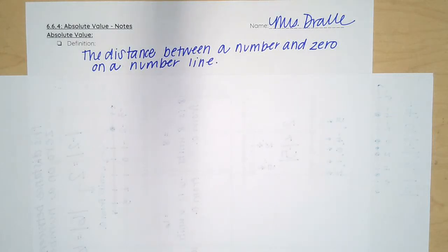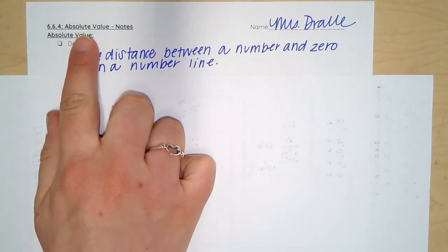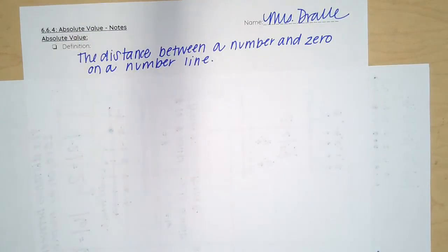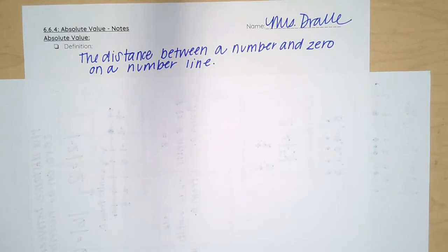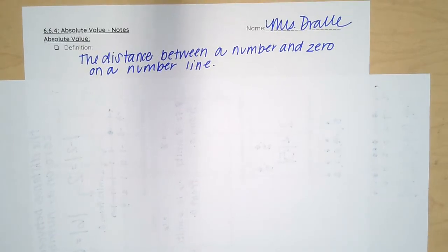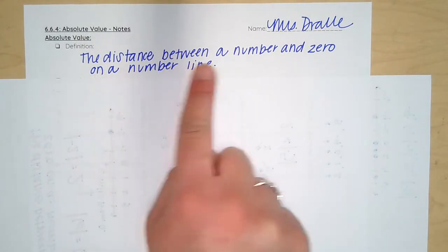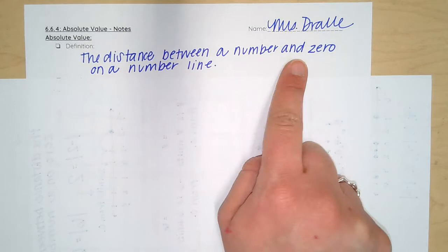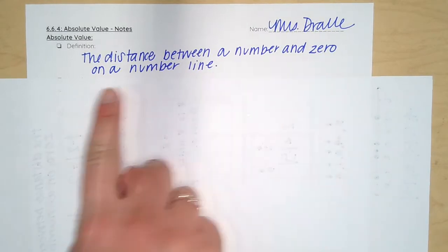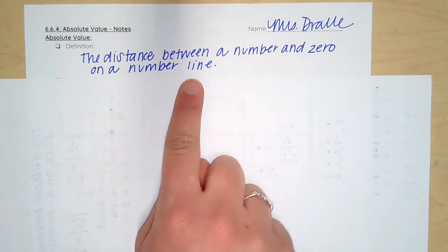Today we are going to talk about absolute value. Absolute value is the distance between a number and zero on a number line.